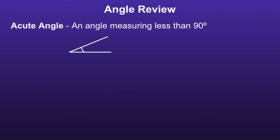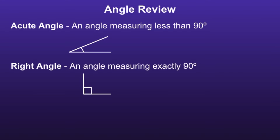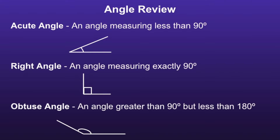Before we start with the triangles, I want to review angles. An acute angle is an angle measuring less than 90 degrees. A right angle is an angle measuring exactly 90 degrees. And an obtuse angle is an angle greater than 90 degrees but less than 180 degrees.